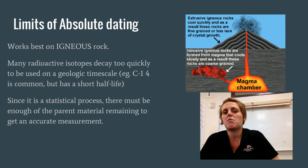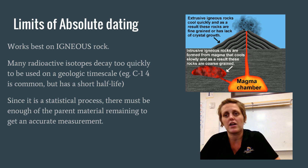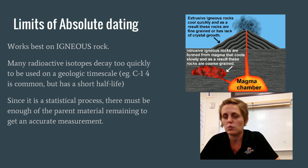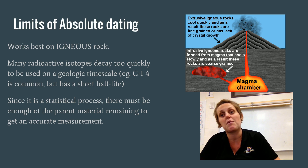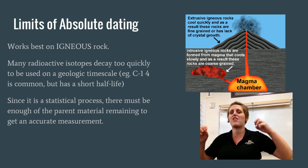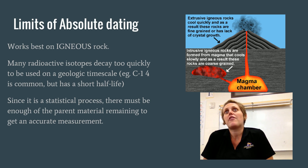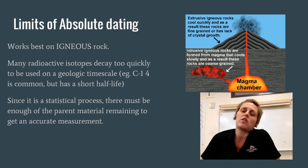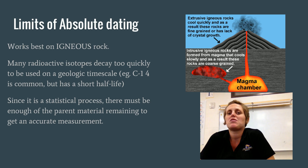There are limits to absolute dating. We can't just go around and beep a device on things and say this rock is exactly this old, because it doesn't work on every type of rock. It works best on igneous rocks — those are the types of rocks formed as a result of cooling magma, whether that's intrusive igneous rocks inside the earth, or extrusive igneous rocks that come out of a volcano. These are not the most common types of rocks. The most common rocks on the planet are sedimentary rocks, and yet those are the ones worst suited for absolute dating.